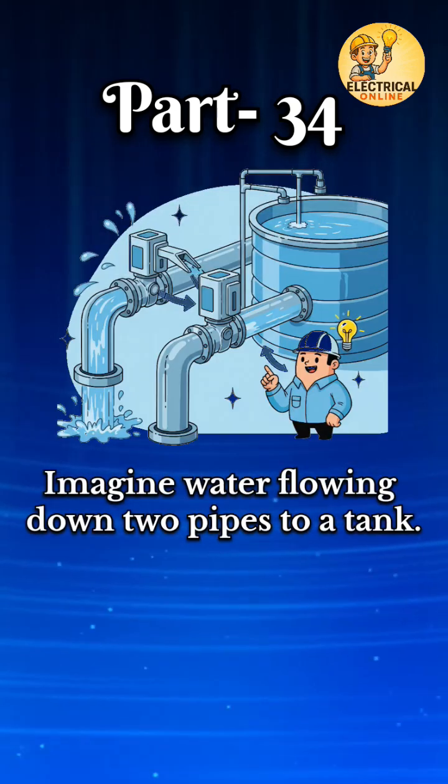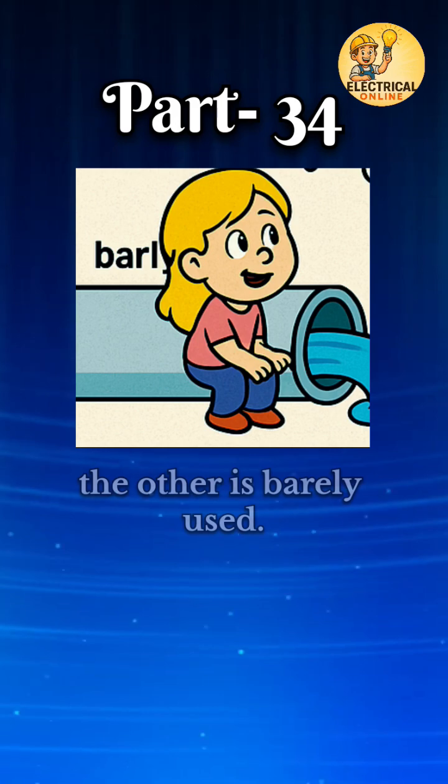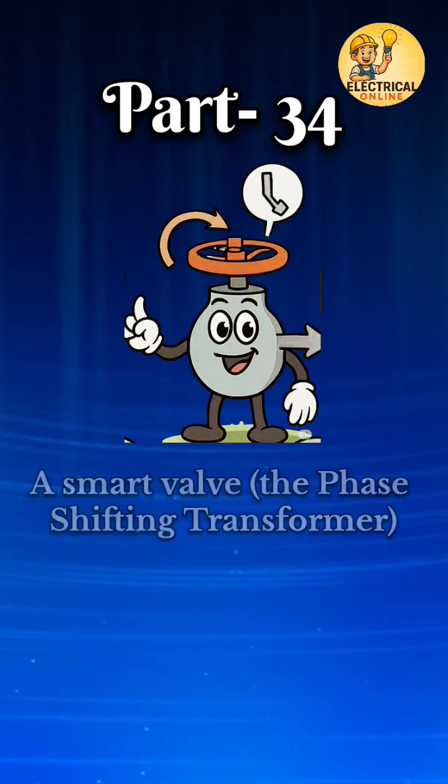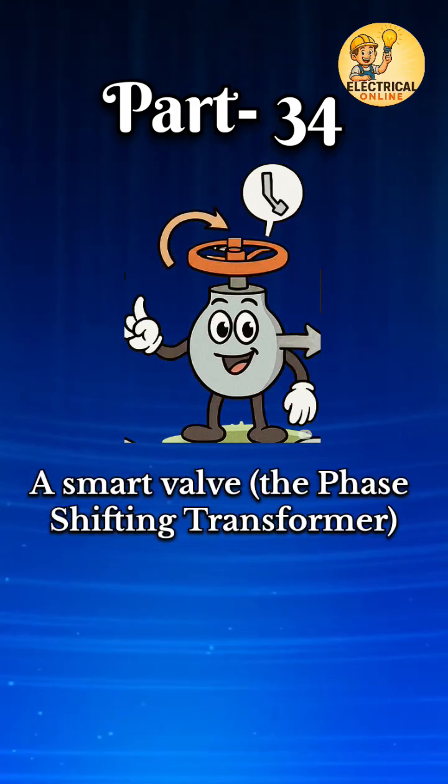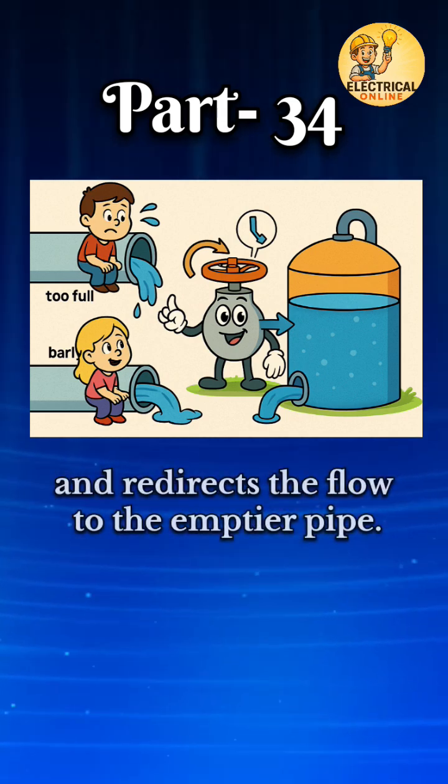Imagine water flowing down two pipes to a tank. One pipe is too full, the other is barely used. A smart valve, the phase shifting transformer, doesn't add more water. It just turns slightly and redirects the flow to the emptier pipe. Simple.